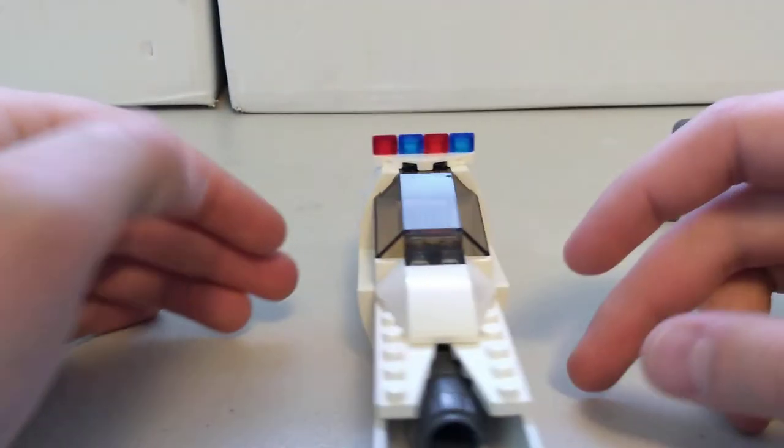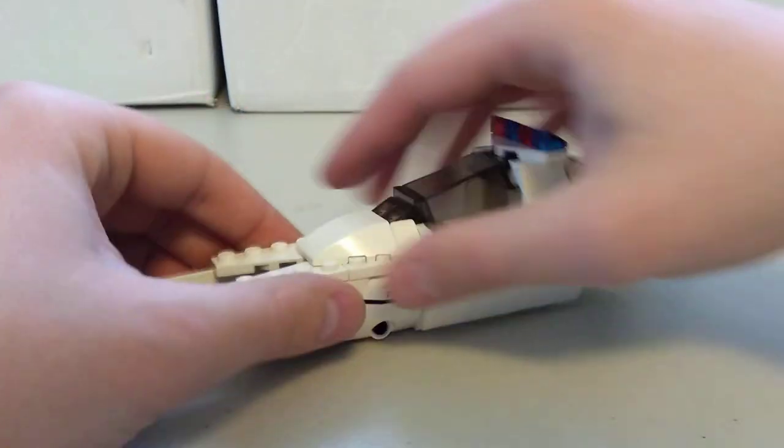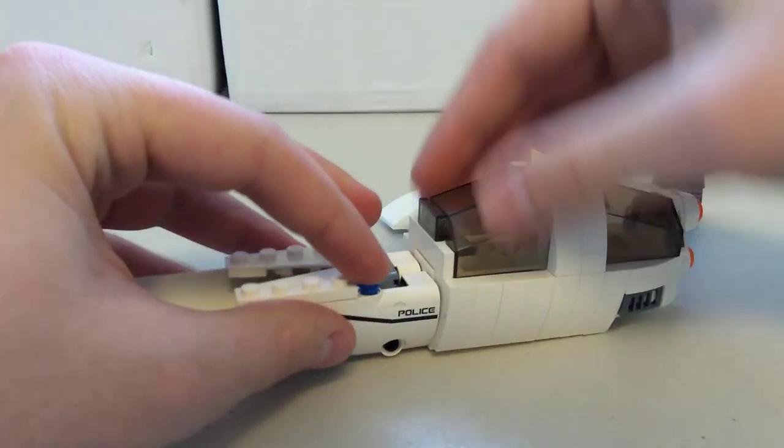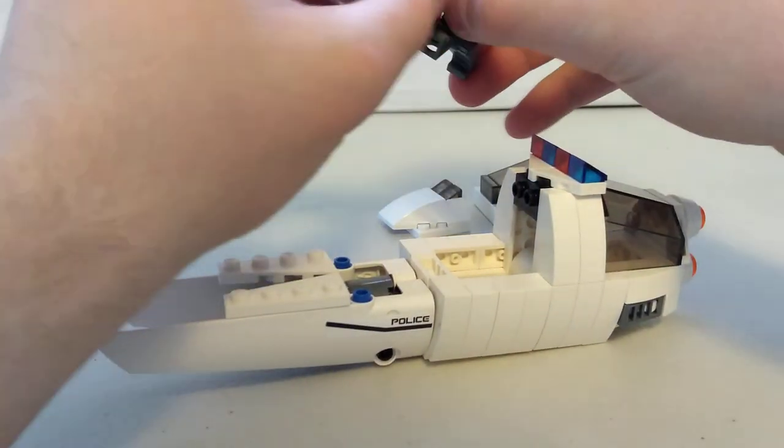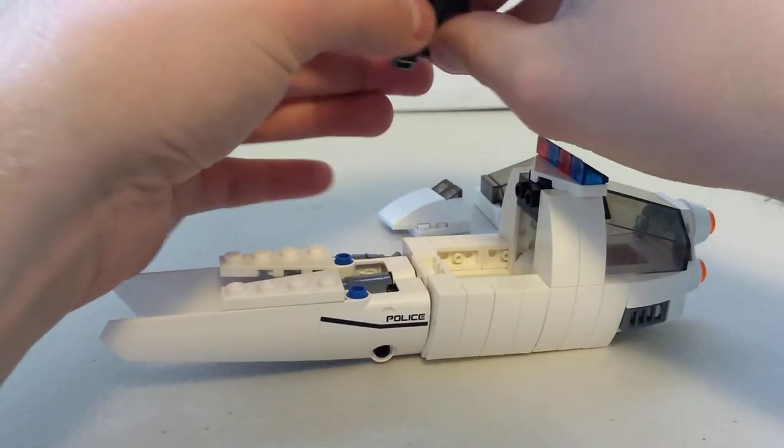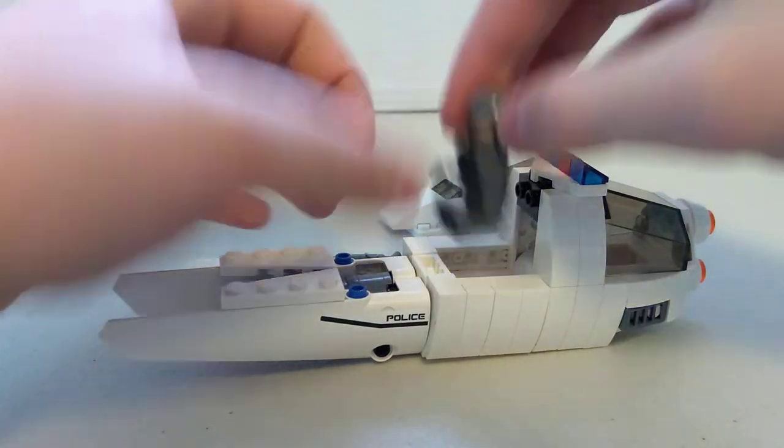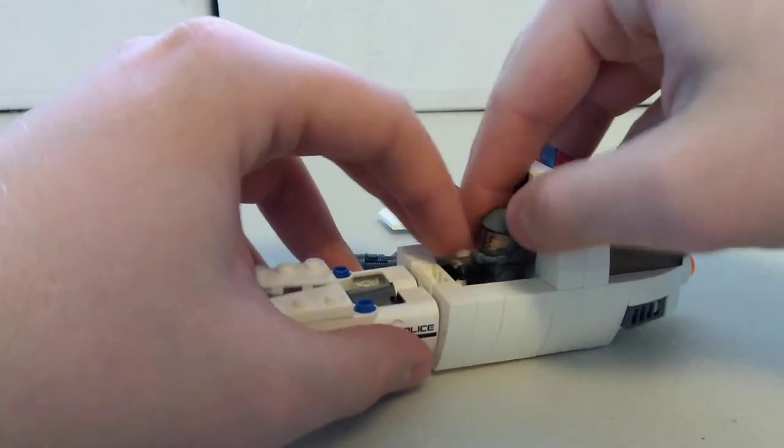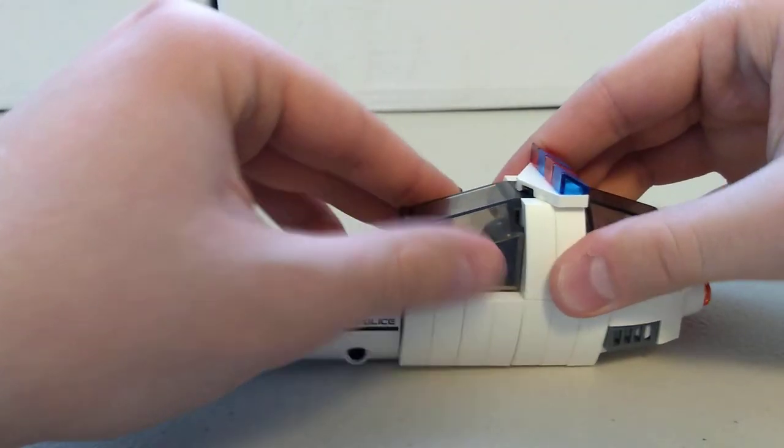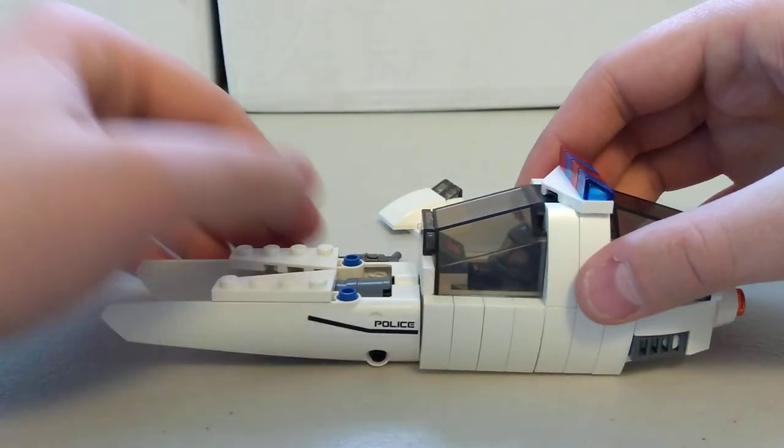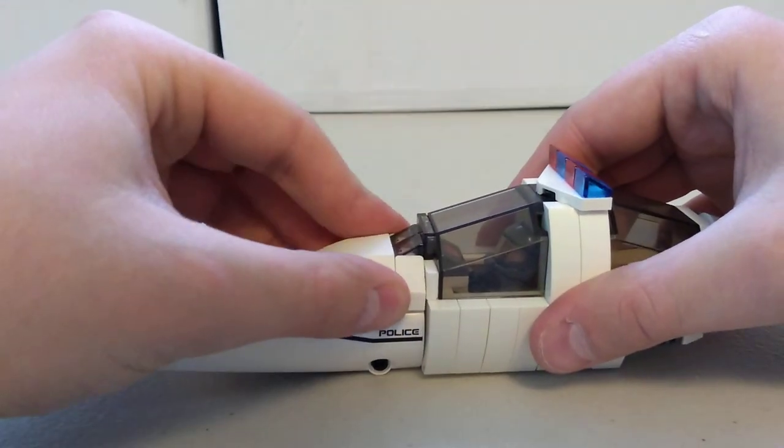So to put the minifigure inside, you simply pop this front piece off and this front windscreen, and you can sit him down and put him there in the front. Once he's in, you just put the windscreen back on. He's got his control panel there, ready to go. And then put this front piece on.